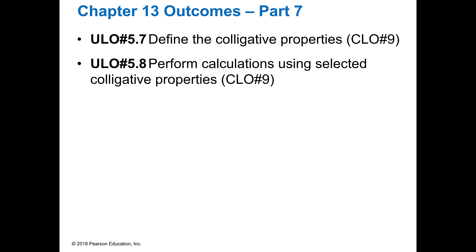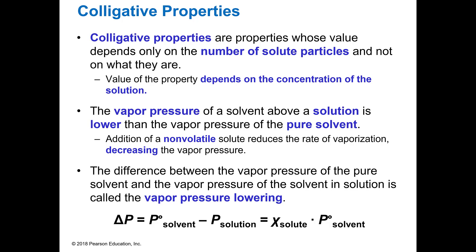We're going to define colligative properties and then perform some calculations. Colligative properties are properties that only rely on how many solute particles you have — it doesn't matter what they are. It only depends on the concentration of the solution.